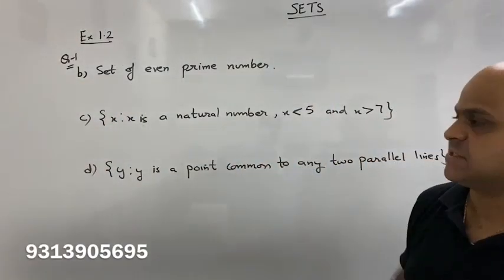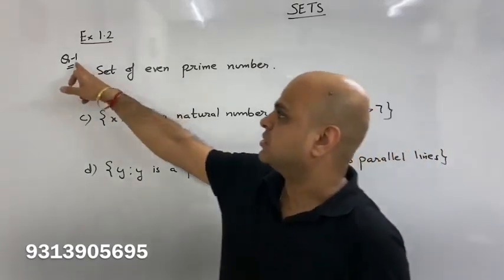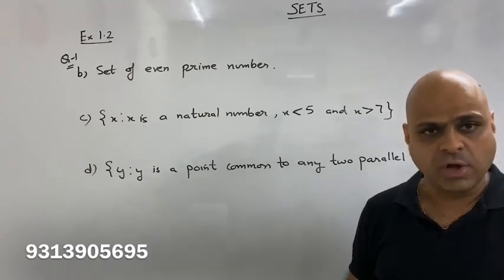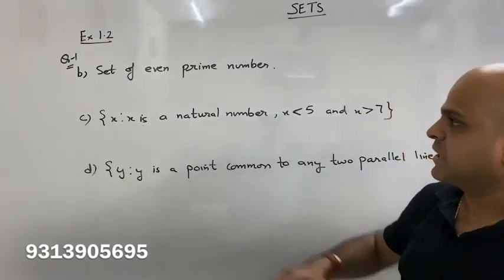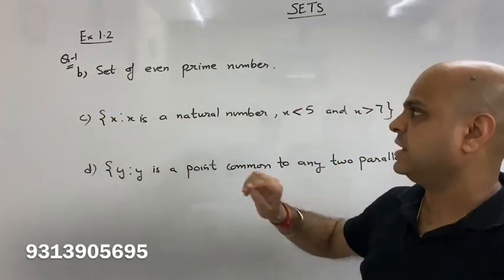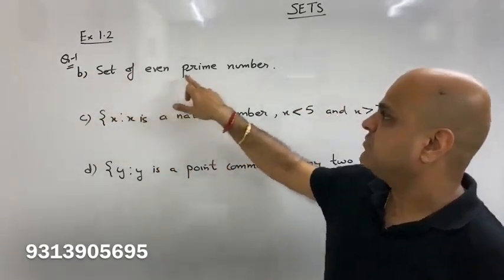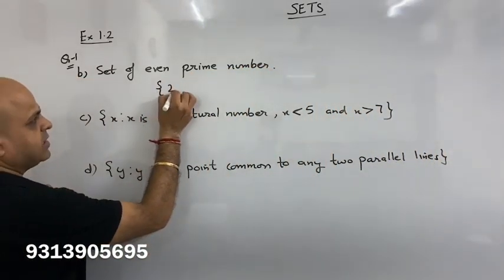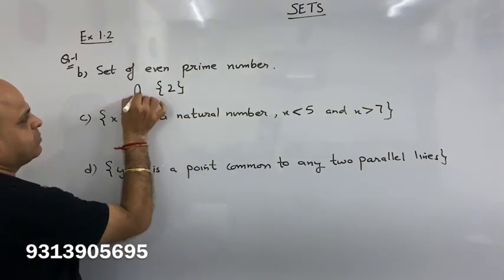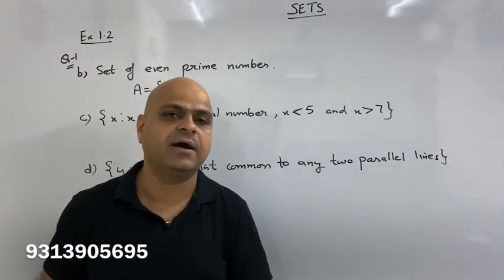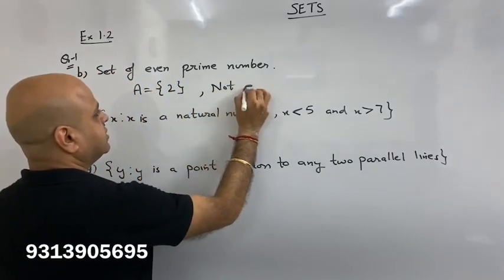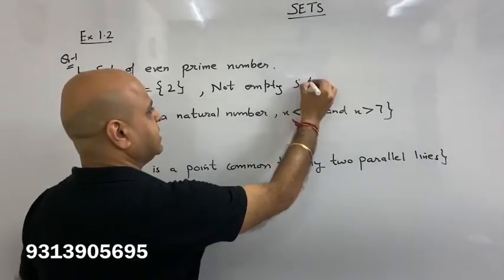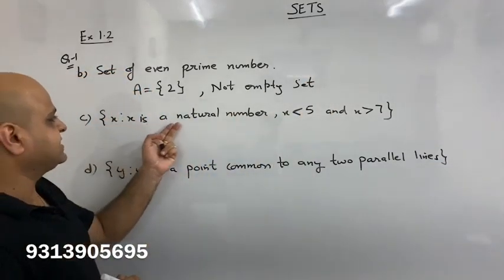Now, the first question: is the set of even prime numbers a null set? No — the set of even prime numbers contains the element 2, so this set has one element. Therefore this is not an empty set.